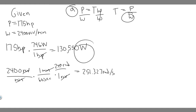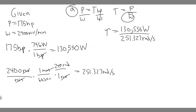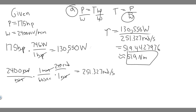Now we've got the correct units — radians per second and watts — so we can plug it in. Torque equals power over angular velocity: 130,550 watts divided by 251.327 radians per second. When you do that division you get 519.44... You can round however your teacher wants, but that's about 519 newton meters. So 519 newton meters is your answer to Part A.